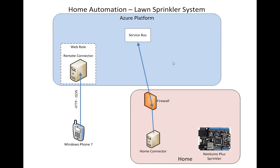If I were to turn on the sprinkler system from my phone, an HTTP JSON request would be sent to the remote connector. That would in turn be mapped to a service bus remote procedure call, which would find the open channel and follow it through my firewall to the home connector, and then get mapped back into an HTTP JSON request sent to the Netduino Plus sprinkler, which would then turn on my sprinkler heads.